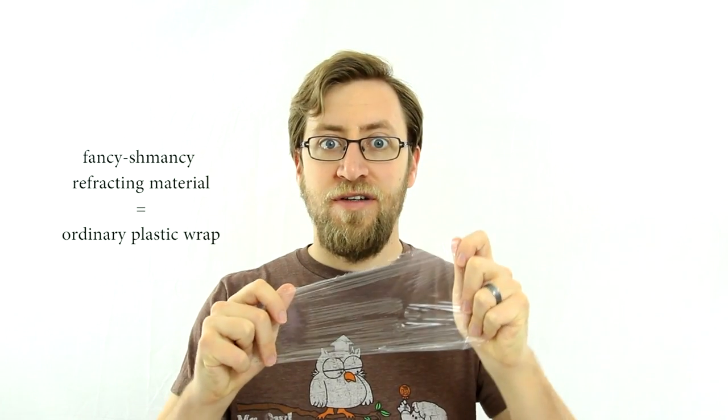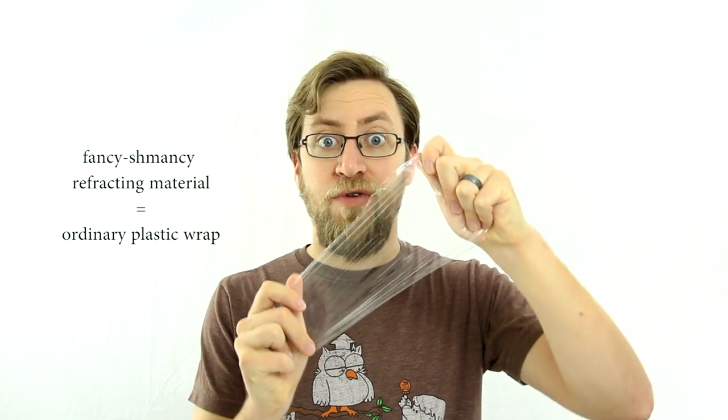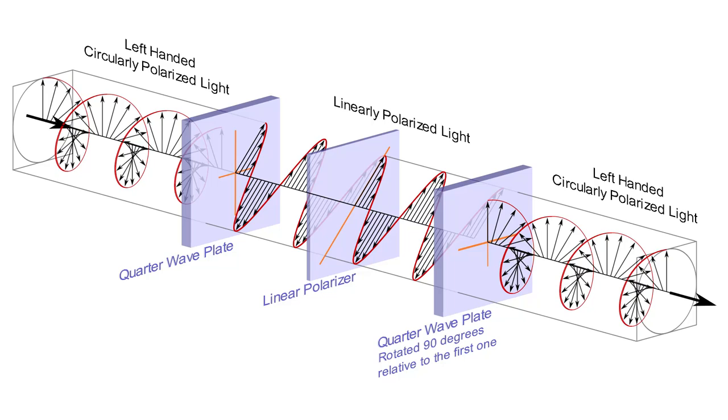Then you take that material and you put it at a 45 degree angle relative to your polarizer. That makes the light slow down in one axis more than the other, which causes the light to develop a circular wobble. You can see this start to work if I take two polarizers that are opposed to one another, and then I stick the material in between.